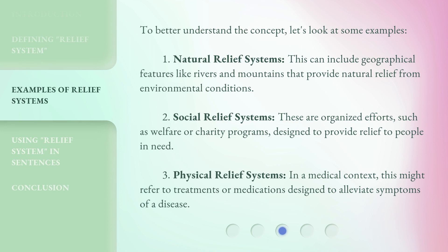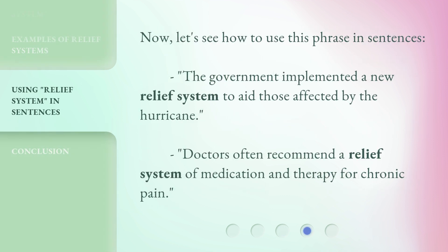So, let's look at some examples. The government implemented a new relief system to aid those affected by the hurricane. Doctors often recommend a relief system of medication and therapy for chronic pain.